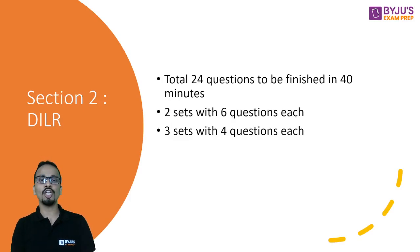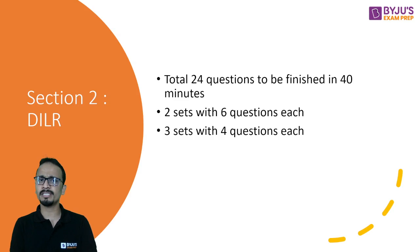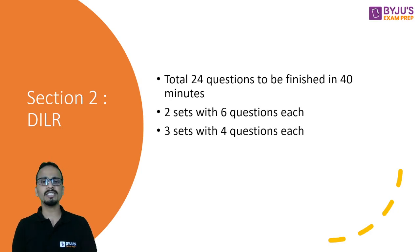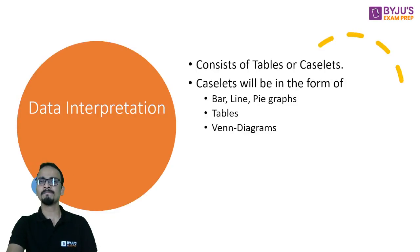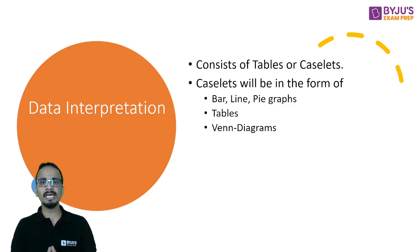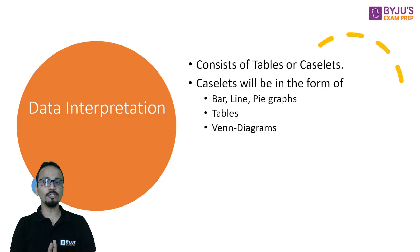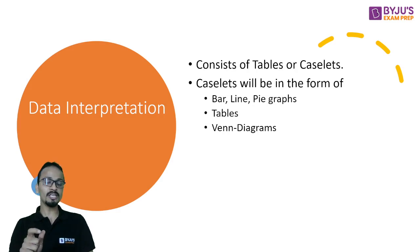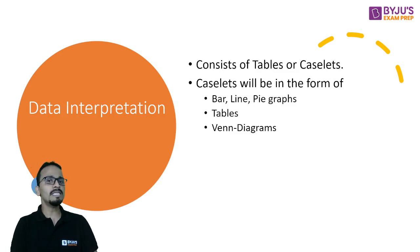Let's move to Section 2 — Data Interpretation and Logical Reasoning. In the last year there were 24 questions with a 40-minute time limit. There were five sets total: two sets with six questions each and three sets with four questions each. For Data Interpretation, sets consist of tables and caselets — bar, line, or pie graphs, tabular data. The most favorite CAT topic is Venn Diagrams and set theory, ranging from three-set to four-set Venn diagrams and maxima-minima applications.